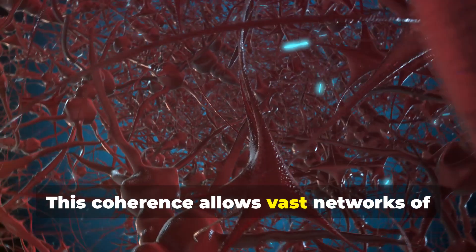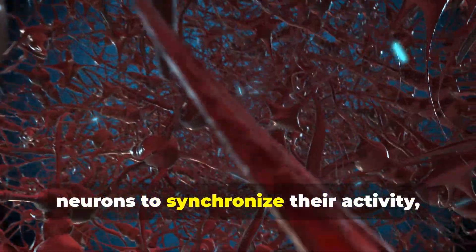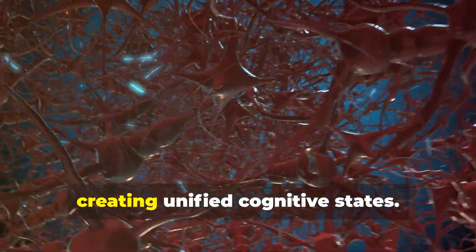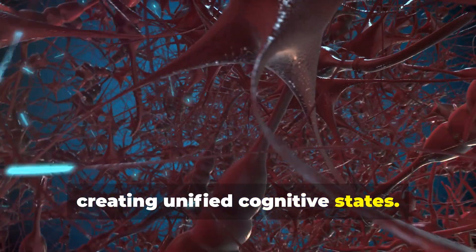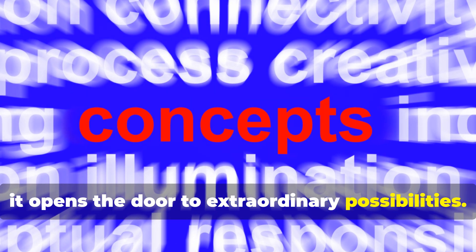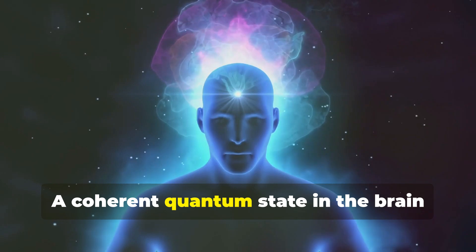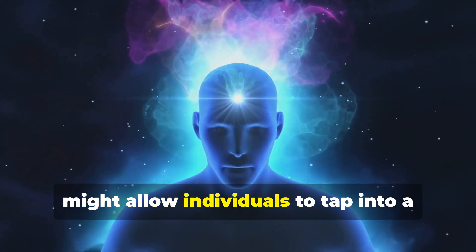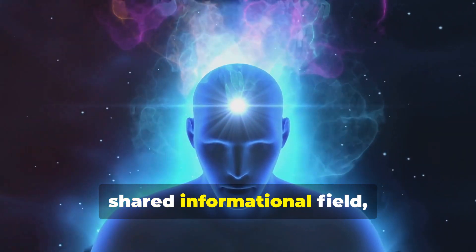This coherence allows vast networks of neurons to synchronize their activity, creating unified cognitive states. If true, it opens the door to extraordinary possibilities. A coherent quantum state in the brain might allow individuals to tap into a shared informational field, much like particles in an entangled system.